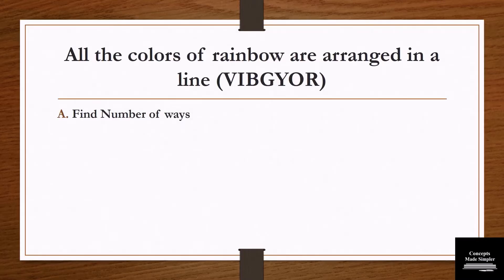Let's start with the very first question — a very simple one. All the colors of the rainbow are arranged in a line. If you don't know the colors in a rainbow, it is VIBGYOR: violet, indigo, blue, green, yellow, orange and red.